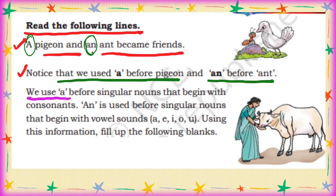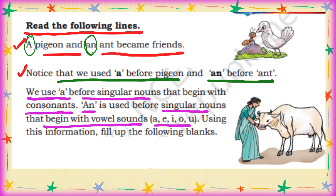We use A before singular nouns that begin with consonants. AN is used before singular nouns that begin with vowel sounds: A, E, I, O, U.